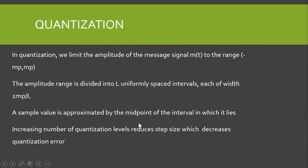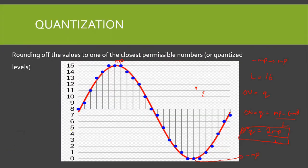A sample value is approximated by the midpoint of the interval in which it lies. Since we have equally spaced quantized levels, the step size is the same throughout. For example, if the amplitude is between 8 and 9, I will assign it to either 8 or 9. If it's less than 8.5, I assign it to 8; if greater than 8.5, I assign it to 9. If it's exactly at the midpoint 8.5, I assign it to either 8 or 9.